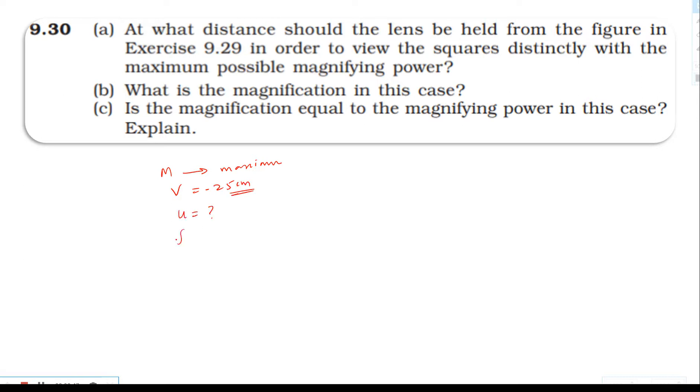Using the lens formula: 1 by F equals 1 by V minus 1 by U. Rearranging: minus 1 by U equals 1 by F minus 1 by V, which equals 1 by 10 minus 1 by minus 25.